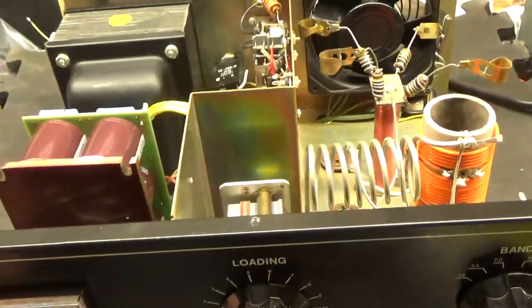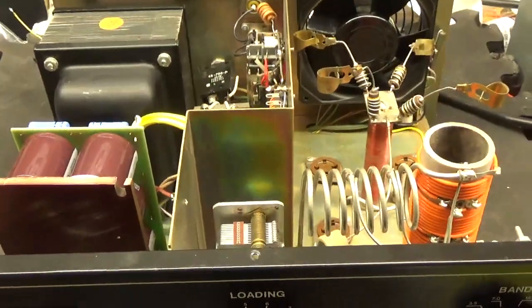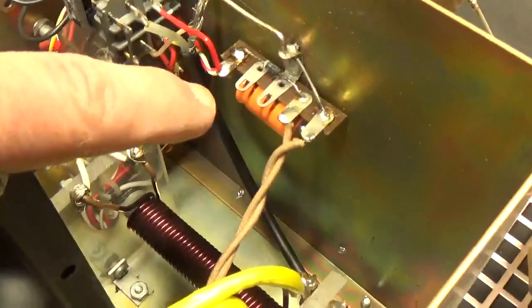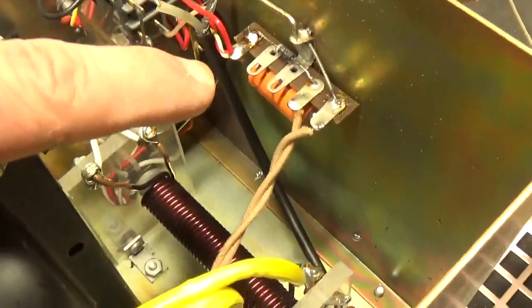So now I just need to test the tubes, put them in, and fire it up. I also changed the electrolytic cap for the keying circuit. Those are prone to failure, so I always change them out.